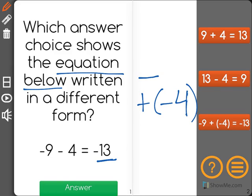So, we can ask ourselves, here we see that we're subtracting 4. Something that we could do instead is we would still start with negative 9, but now we would add a negative 4, because subtracting 4 and adding a negative 4 are the same exact thing.